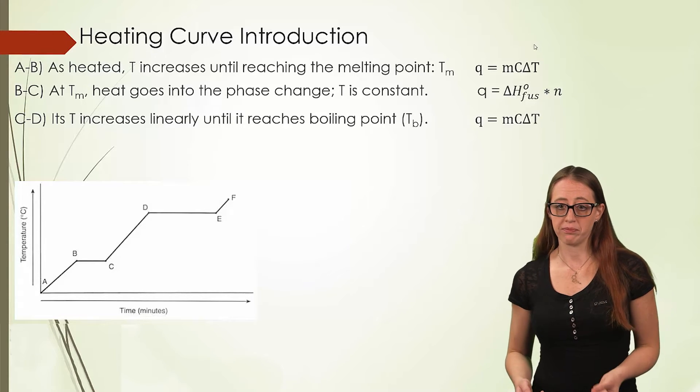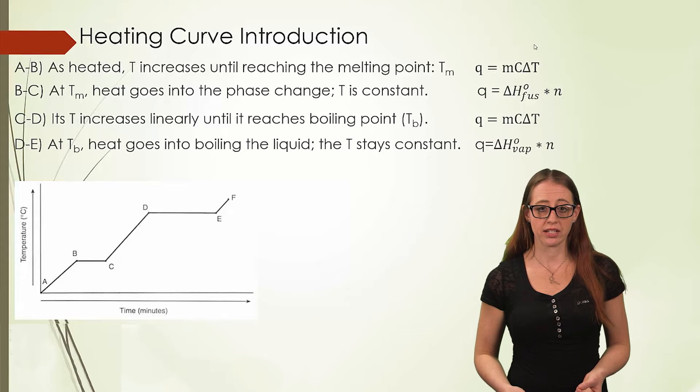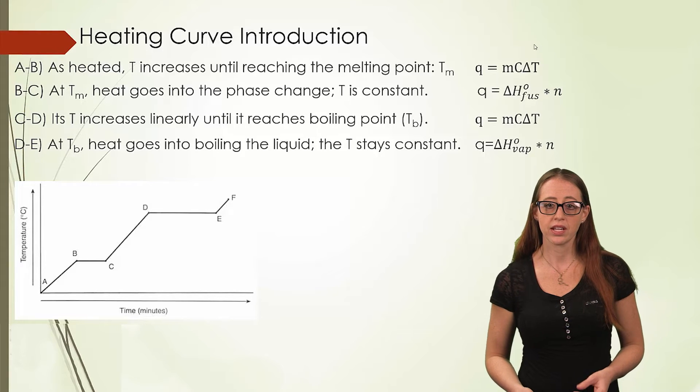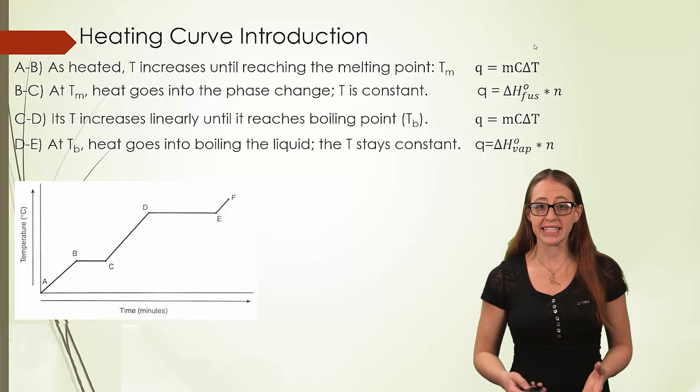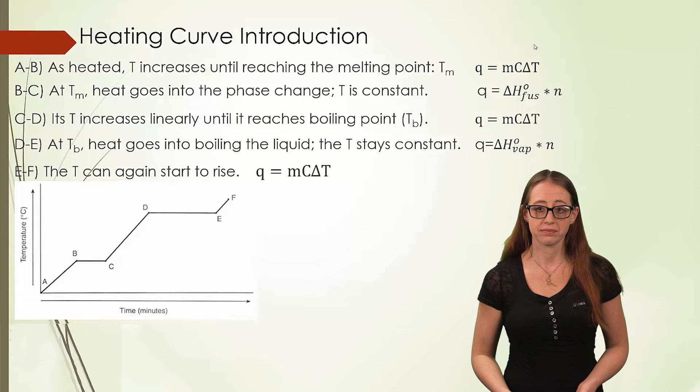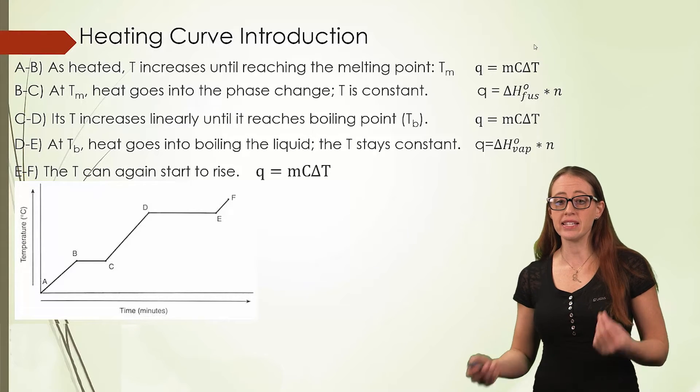Once we've reached the boiling point, we use the heat of vaporization multiplied by the moles, or the mass depending on the units that it's given in. From there, we are going to heat the gas phase, and we are back to Q equals MC delta T. And, of course, we can do any section of this as well.